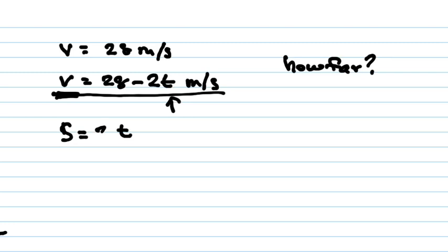28t. So s equals 28t minus, I'm sorry, I was differentiating, not anti-differentiating. So it's minus t squared plus c. We don't know c yet, right?